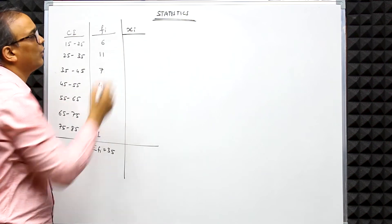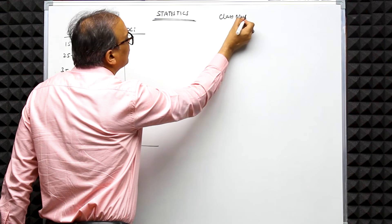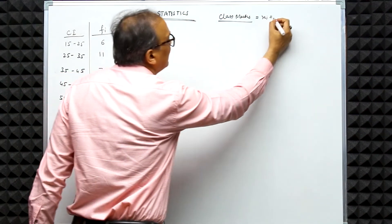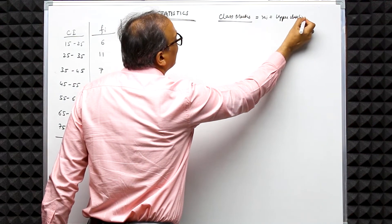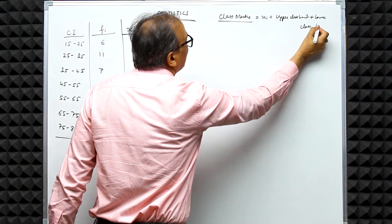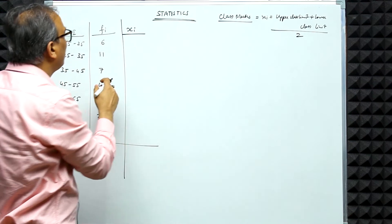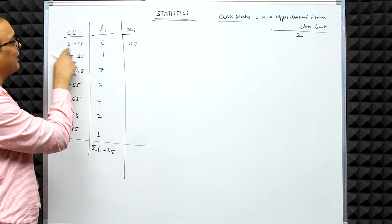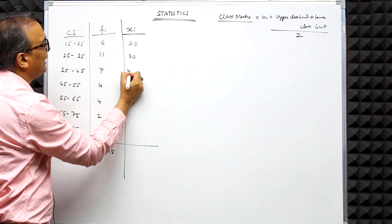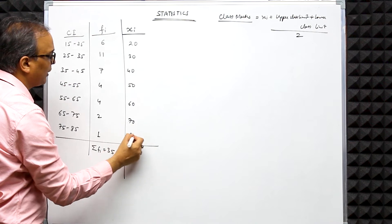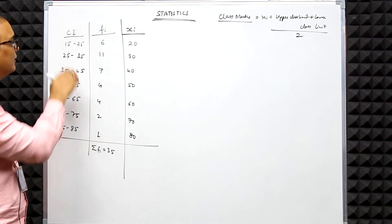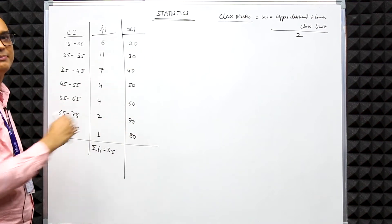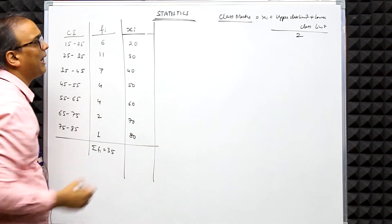The first step for finding the mean is to find the class marks, denoted as xi. The class mark xi = (upper class limit + lower class limit) / 2 — basically the midpoint of the class interval. For example, (25 + 15) / 2 = 20. Since the class size is 10, the class marks increase by 10: 20, 30, 40, 50, 60, 70, and 80.